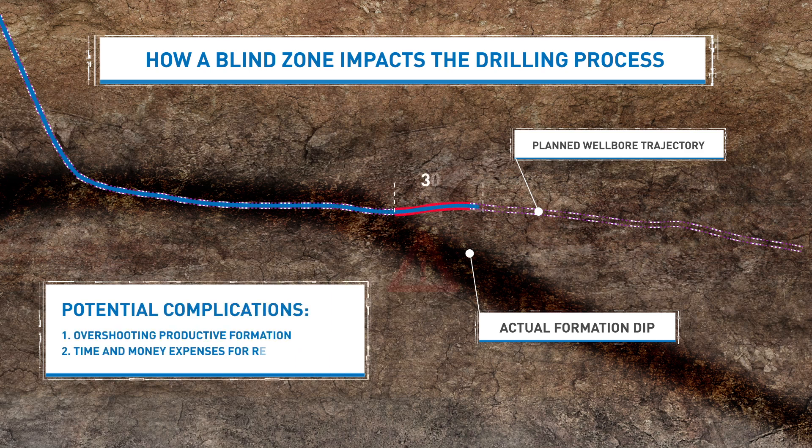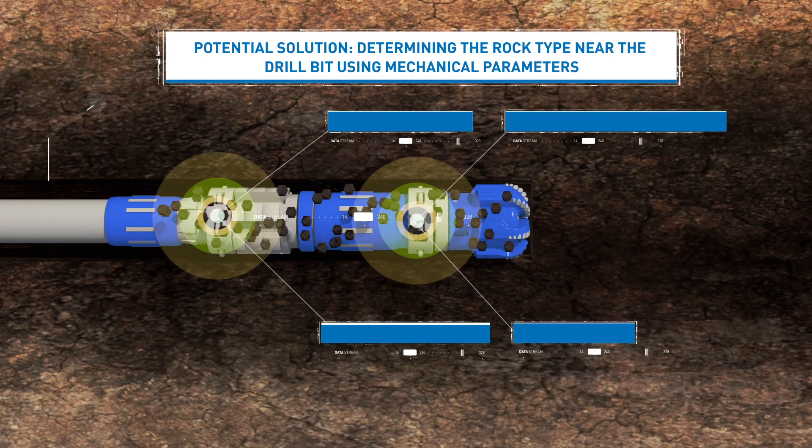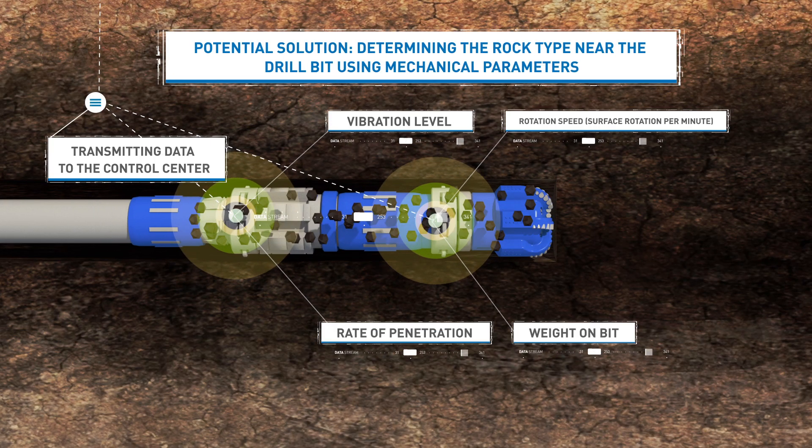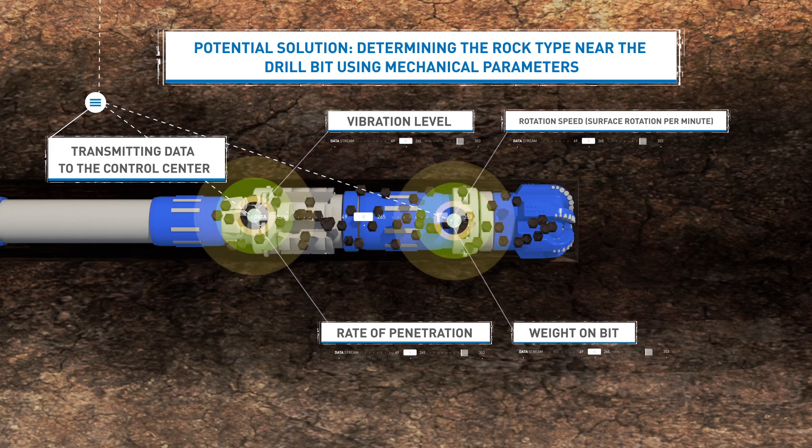In the process of horizontal wells drilling, it is important to remain in the required pay zone as far as possible. The blind zone impacts response times in reacting to any divergence between the true and the modeled formation dips.